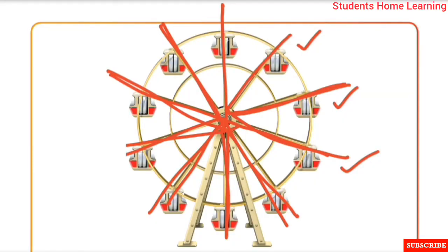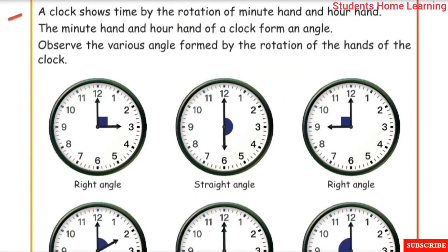This is the Rotating Angles in Time. A clock shows time by the rotation of the minute hand and the hour hand. The minute hand and hour hand of a clock form an angle. Observe the various angles formed by the rotation of the hands of the clock. What is the angle of the clock?